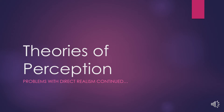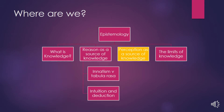Welcome back to Epistemology. We are looking at theories of perception and we are right in the middle of looking at direct realism and the problems with this theory. We've looked at what is knowledge, we've explored reason as a source of knowledge — the idea that just through thinking we can come to new knowledge — and we're now looking at perception and using our senses as a source of knowledge and the limitations of that.